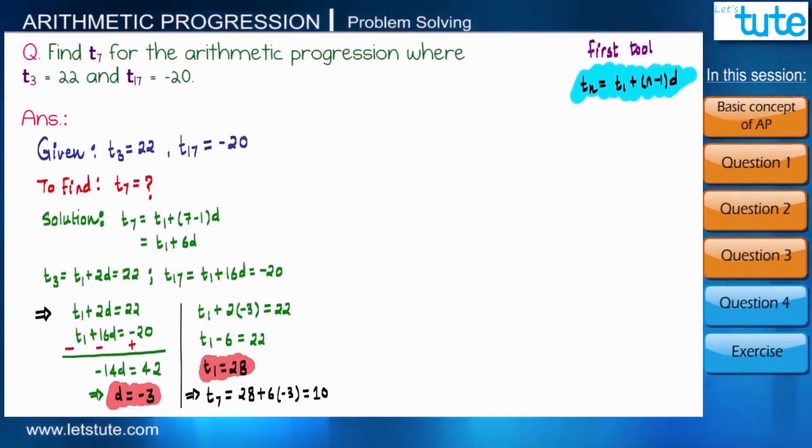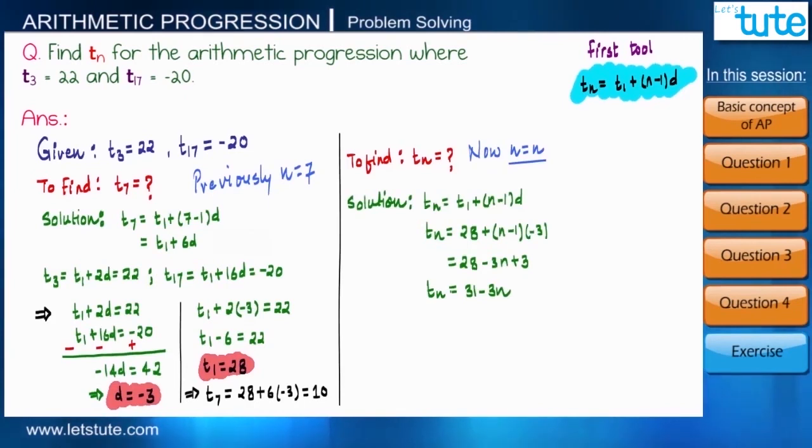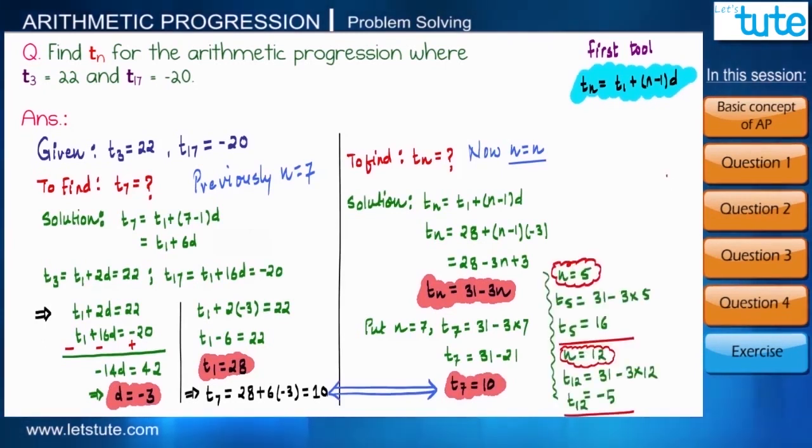Okay, so now suppose if I ask you to find tn instead of t7, what will you do? See, previously it was t7, that means instead of n we had to put 7, so wherever there was n we put 7 over there. But now it is asking us to find tn only. So t1 and d will remain same, and we will write n as it is. So by putting all the values in the formula, we will get tn equals 31 minus 3n, which is a general expression in the form of n. For example, if you want to cross check whether t7 we found was correct or not, so you just put the value of n equals 7 and you will get t7 equals 10. Similarly, you can put different values for n and you will get different terms of the sequence.